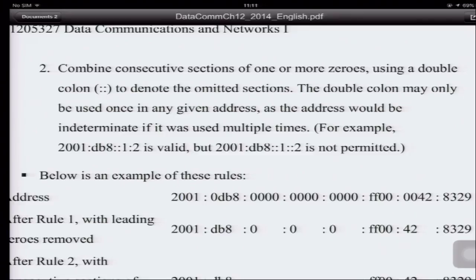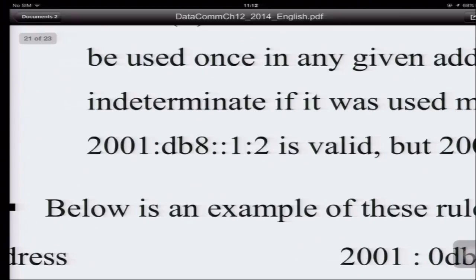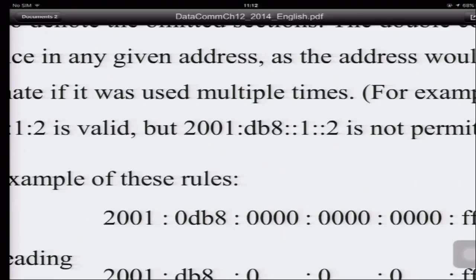You can also combine consecutive sections of all-zero groups using a double colon to denote that you have omitted some sections. But you can use the double colon only once, to avoid confusion about how many groups the double colon represents. For example, if you have one double colon, you know you have to have eight groups — so you count what you have and the double colon fills in the rest. If you have two double colons, you don't know the length of each, so this is not permitted.